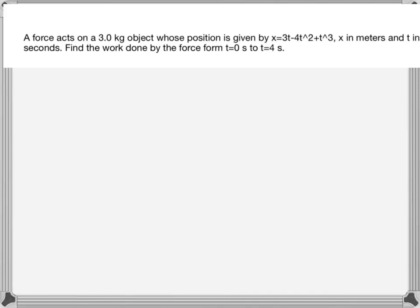This problem says that a force acts on a 3 kg object, so the mass of the object is 3 kg. The position is given by x equals 3t minus 4t squared plus t cubed, so position is given as a function of t, where x is in meters and t is in seconds.